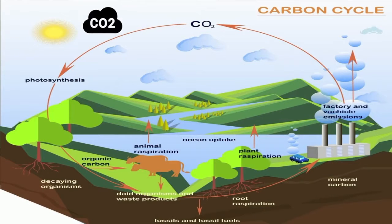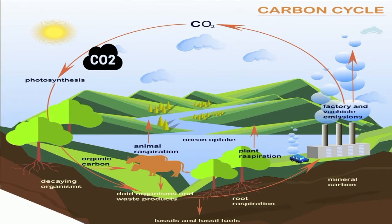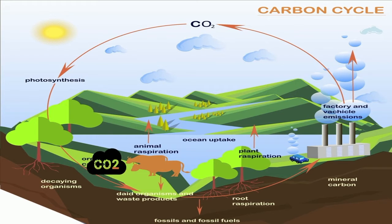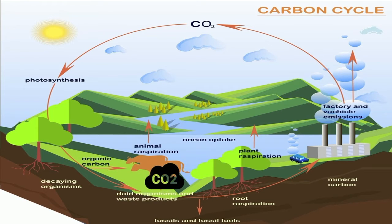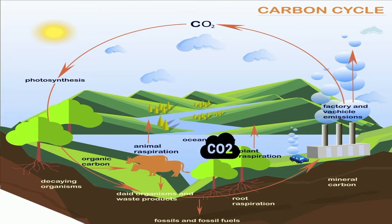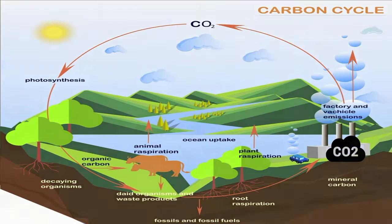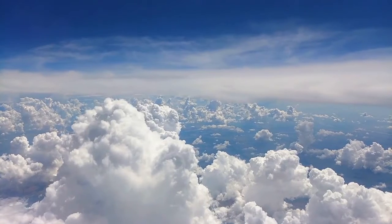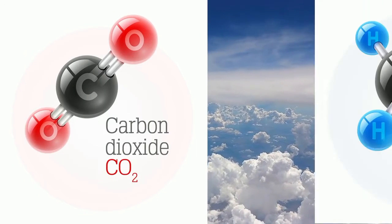These locations include the atmosphere, the terrestrial biosphere or land, the ocean, the Earth's interior, and human influence. Let's take a look at what happens at each of these areas. Carbon is found in the atmosphere in at least two forms: carbon dioxide and methane.